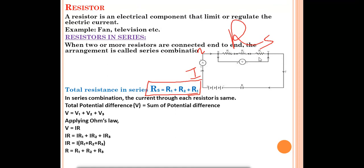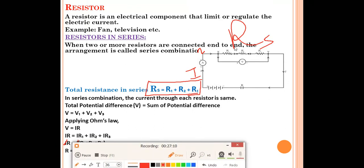The total potential difference V = V1 + V2 + V3. Using Ohm's law V = IR, we substitute: IR = IR1 + IR2 + IR3, and cancelling I gives R = R1 + R2 + R3. So in series combination, all resistors are connected end to end and the formula is R = R1 + R2 + R3.